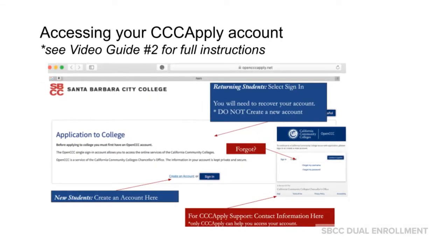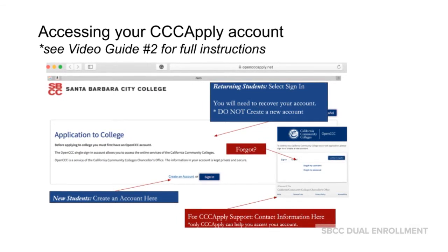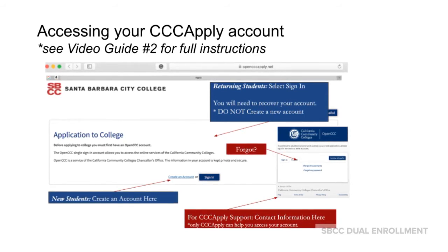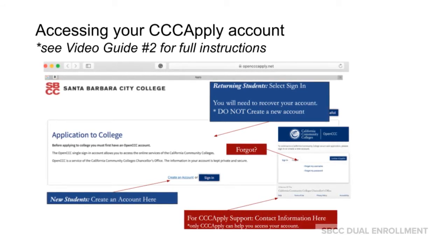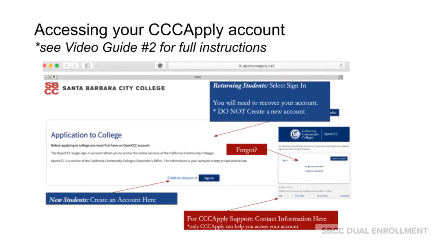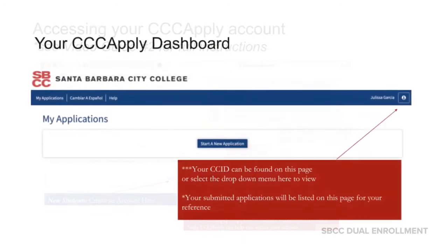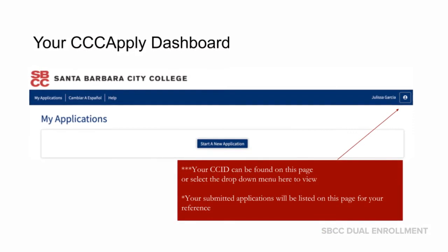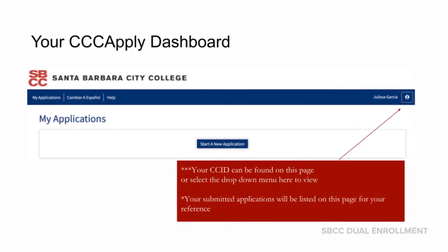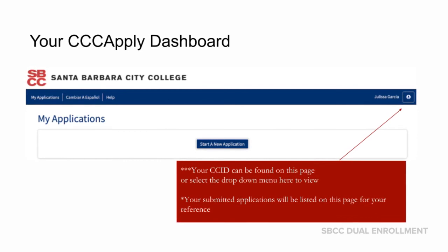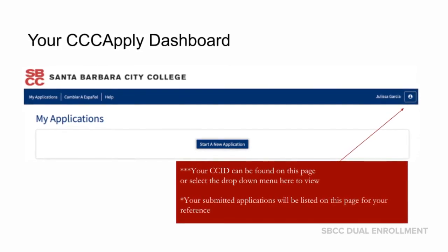You may need to log back into your CC Apply account to access your CC ID. If so, go ahead and log in using the page we previously used in video guide number two. Once logged in, on your dashboard on the top left, you will see a drop-down menu. Your CC ID can be found on this page.